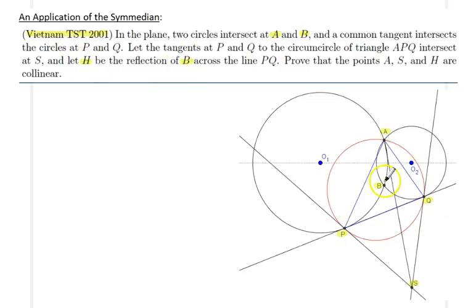And we would like to show that the point H, which is the reflection of B across PQ—so if you reflect B across PQ, somewhere here we have a feeling that it might be this intersection point, but it's not certain yet—so we would like to show that those three points A, H (which is the reflection of B), and S are collinear.